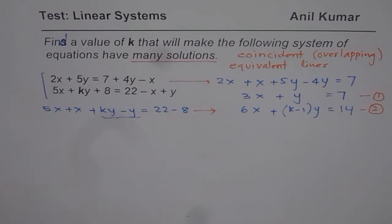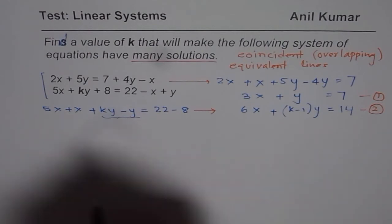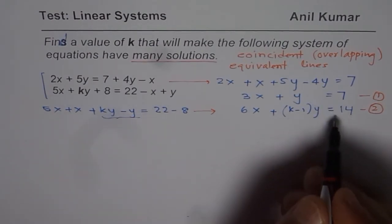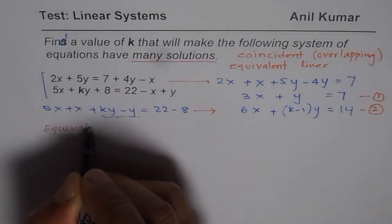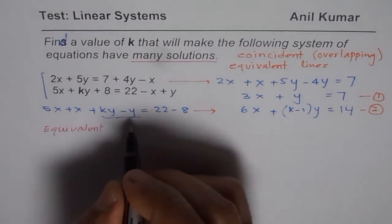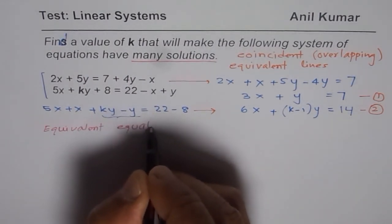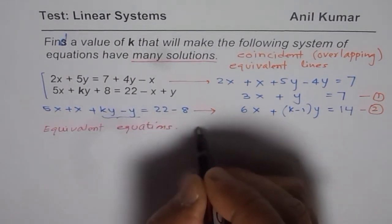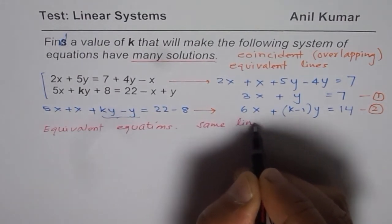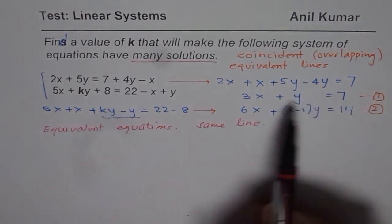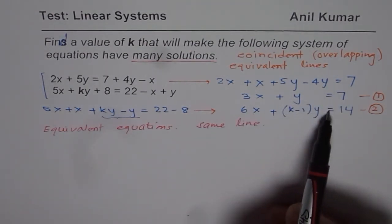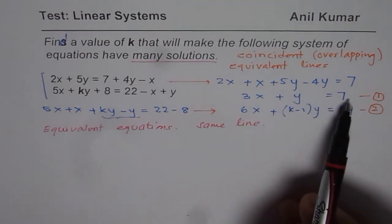Now for infinite solutions or many solutions, what should be true? So these two should be representing the same equations. So we are looking for equivalent equations or same line. Now the first one is 3x plus y equals 7. The other one is 6x plus something equals 14. So how can you make them equivalent?